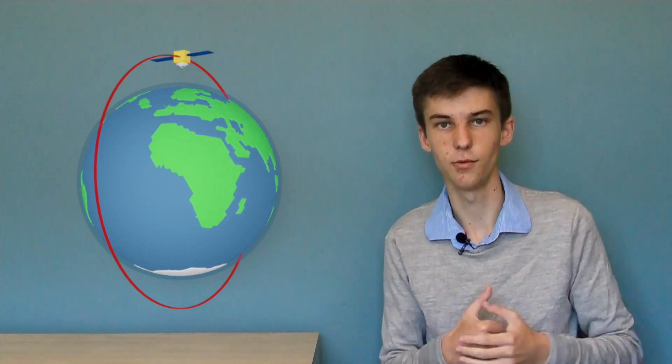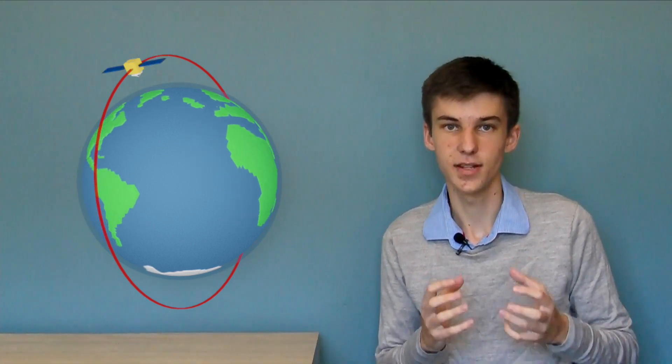Sometimes that's desirable if you only want to pass over certain locations. So that's the more three dimensional way of thinking about orbits when we're considering the usefulness of them.